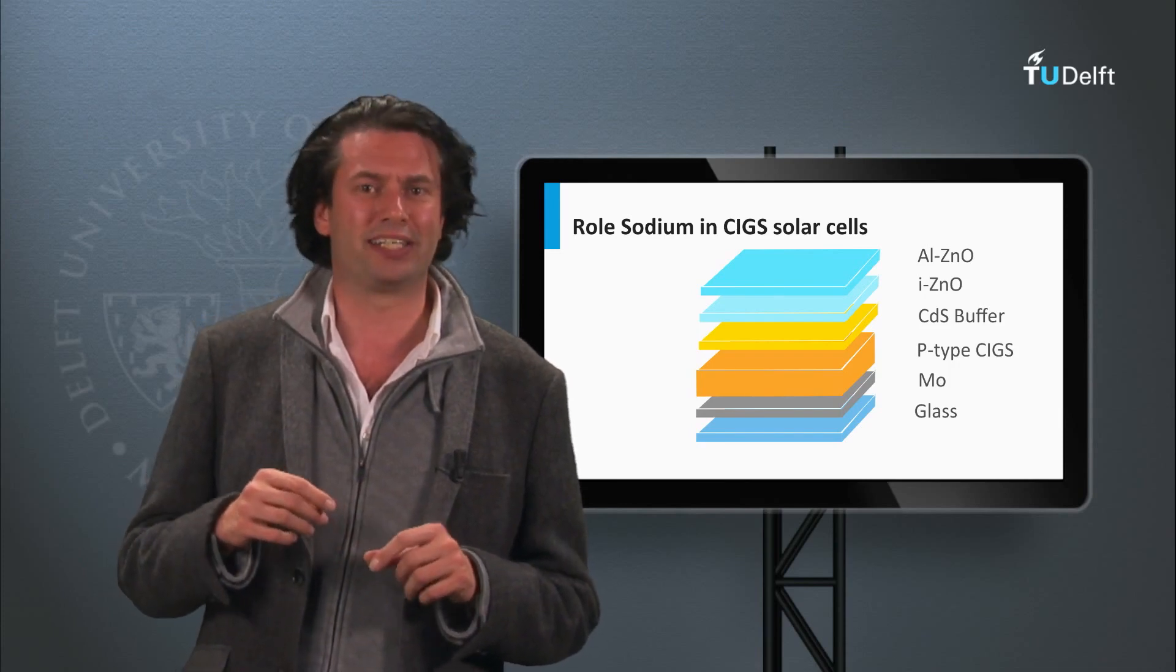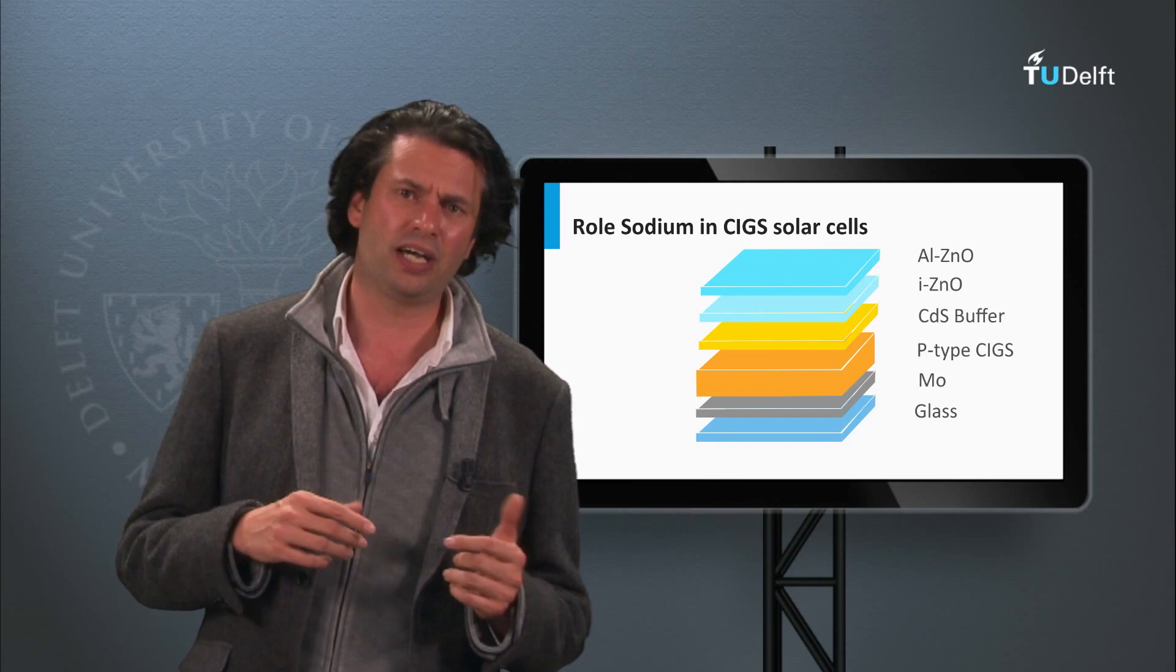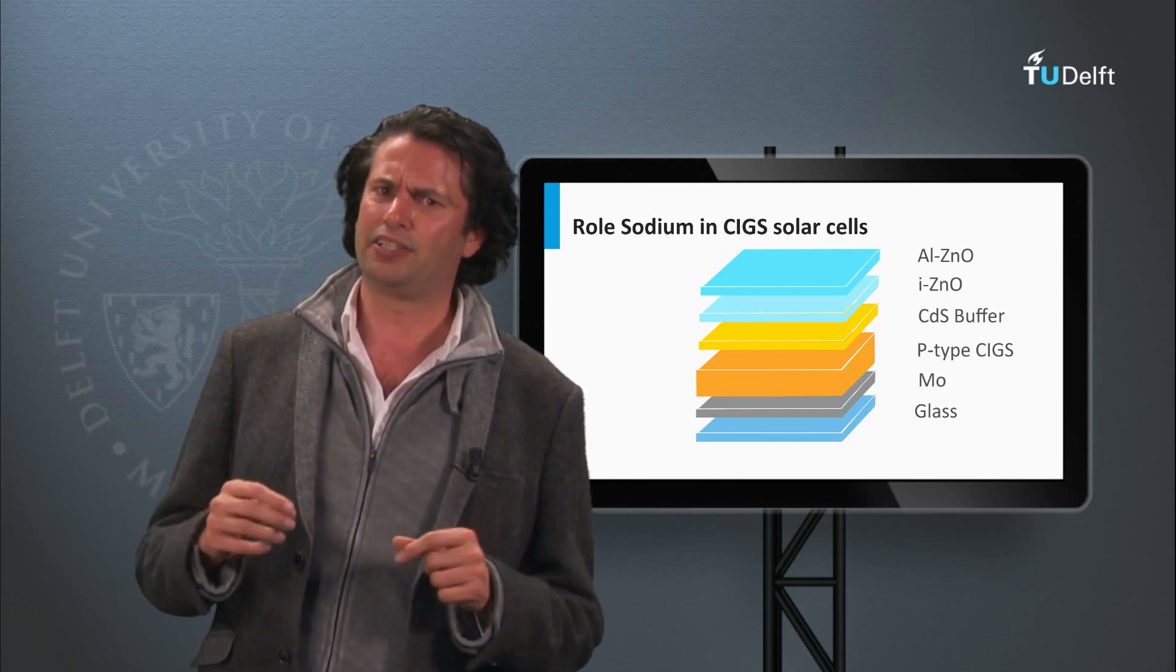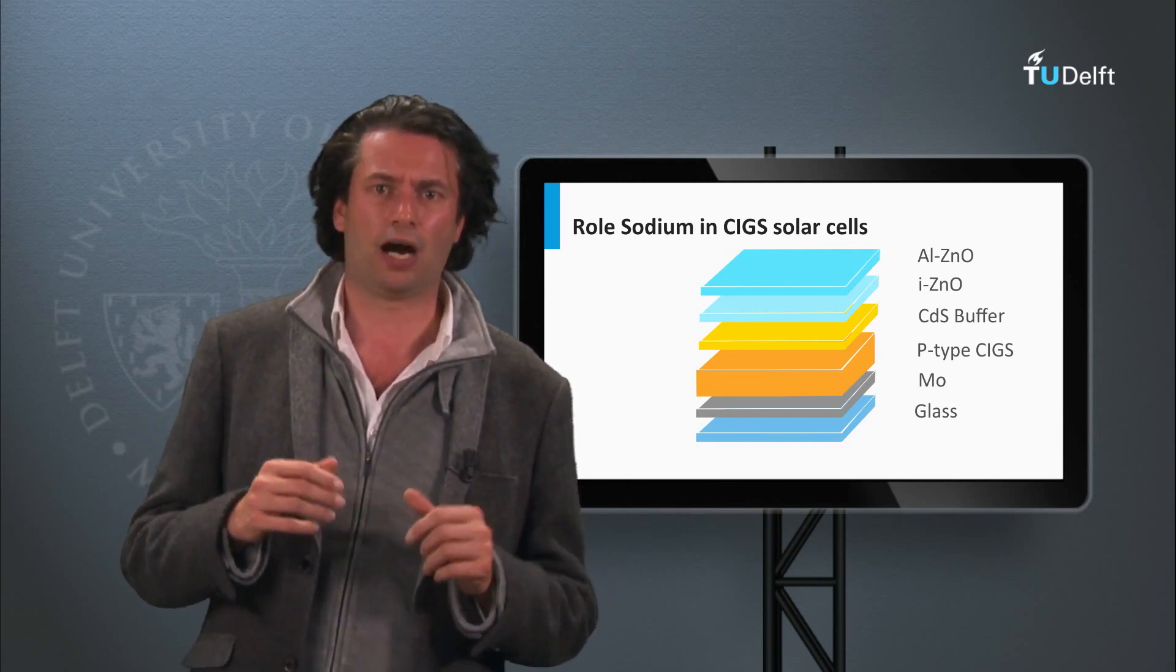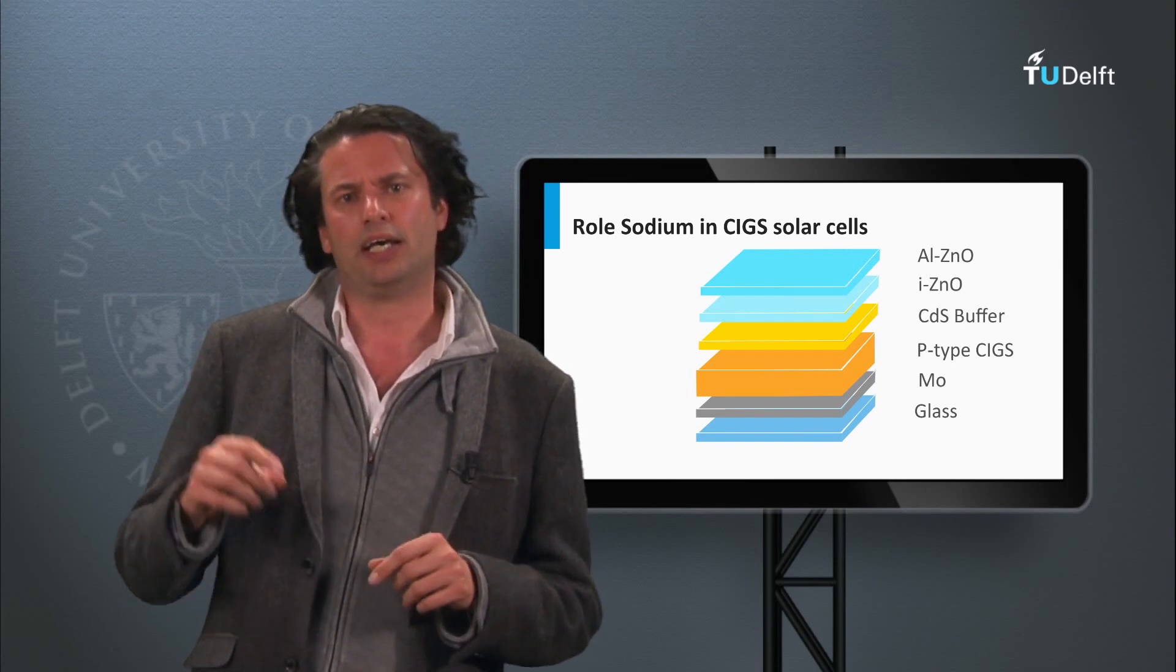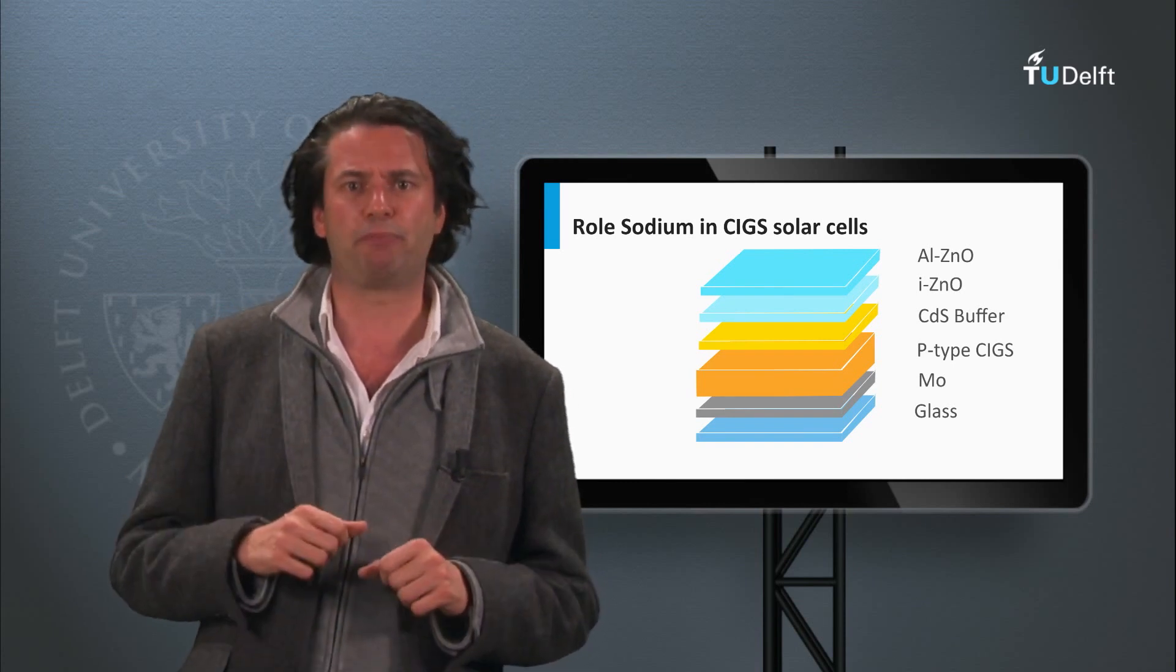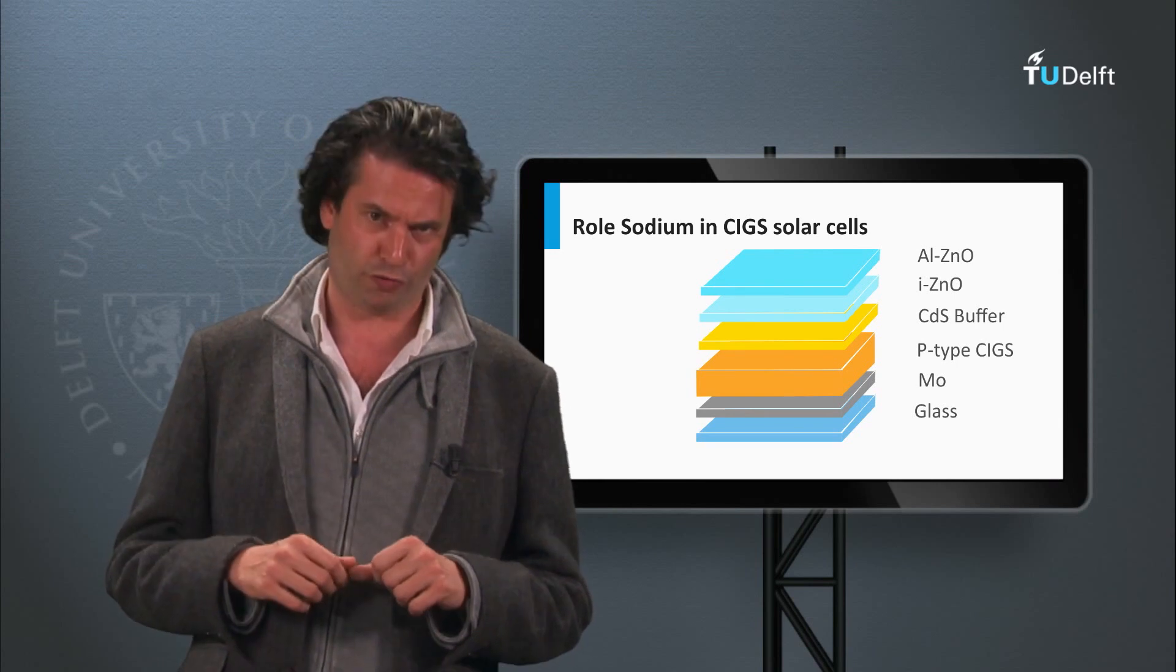Similar to multi-crystalline silicon as discussed last week, the larger the grain size, the less grain boundaries and less recombination are present in the material. This results in higher band gap utilization and higher open-circuit voltages.